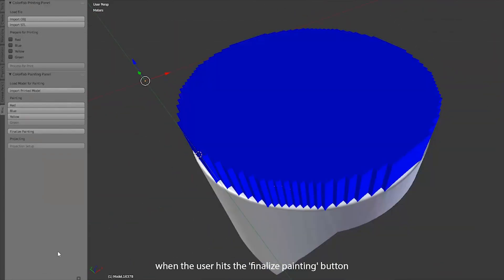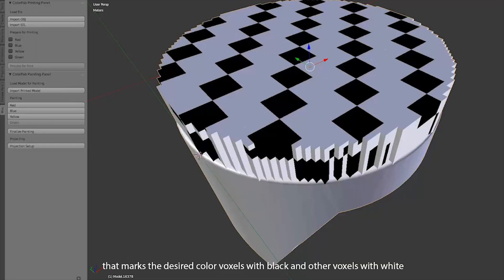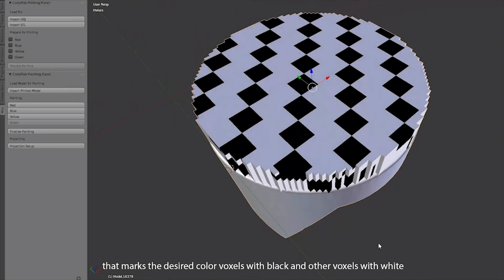When the user hits the finalize painting button, our software prepares the color map that marks the desired color voxels with black and other voxels with white. This color map is then used in the recoloring process.